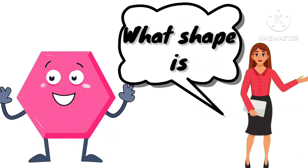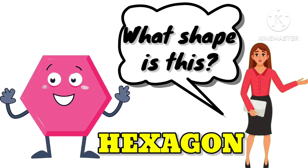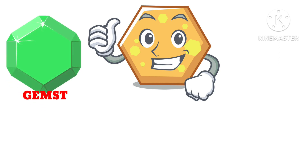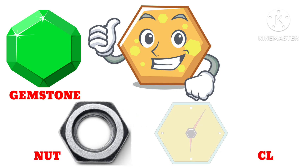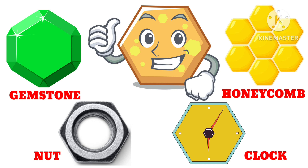What shape is this? This is a hexagon. So kids, let's learn about the objects that are hexagon in shape. Examples: gemstone, nut, clock, and honeycomb are all hexagon in shape.